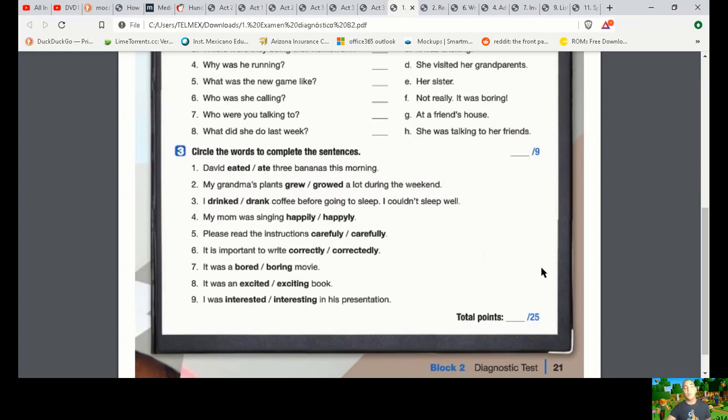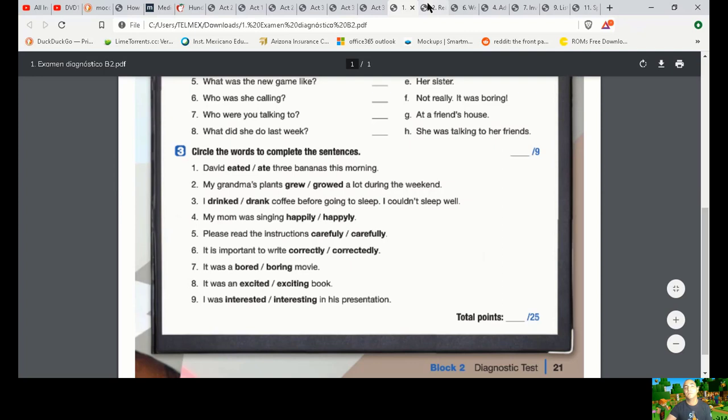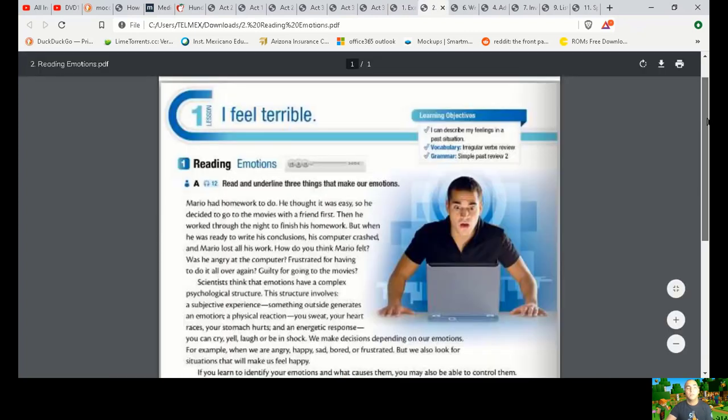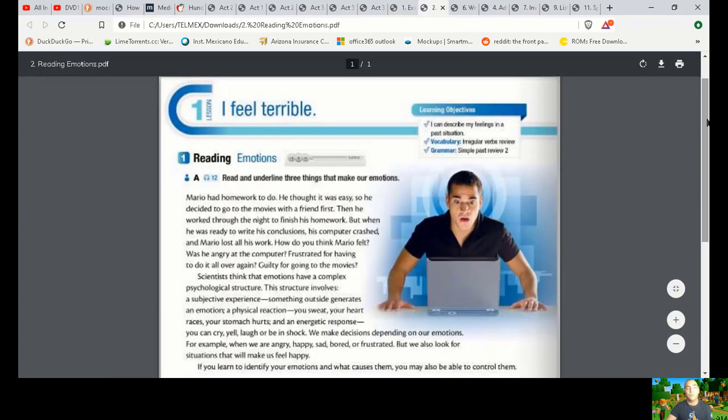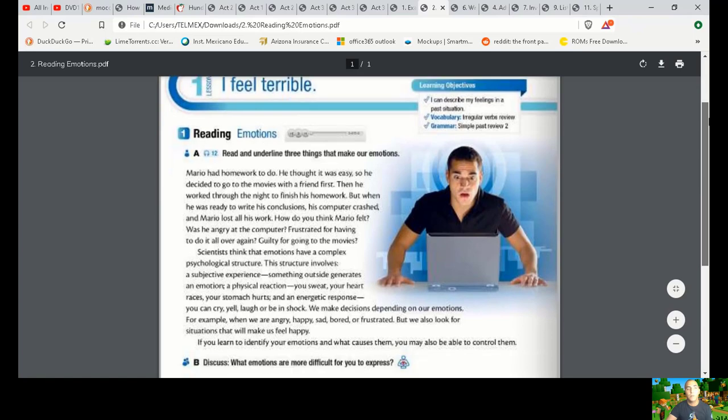Lesson number one, I feel terrible. This is page number 22 of your book. It says learning objectives: I can describe my feelings in a past situation. Vocabulary: irregular verb review. Grammar: simple past review.